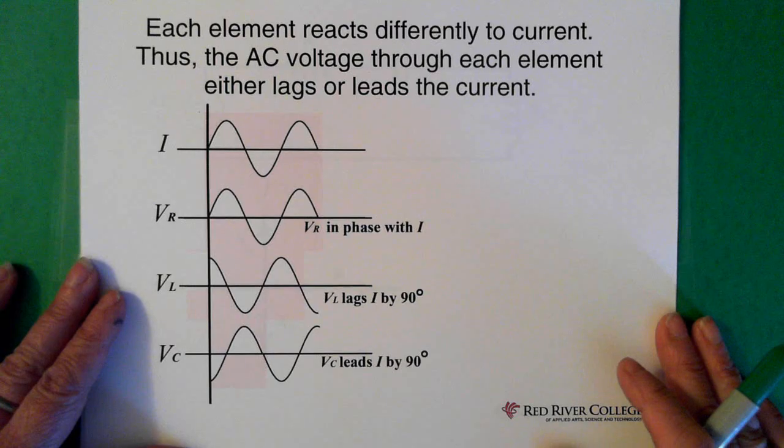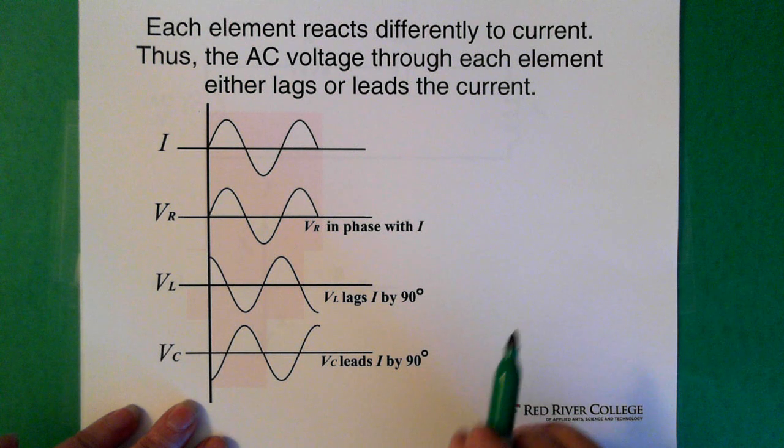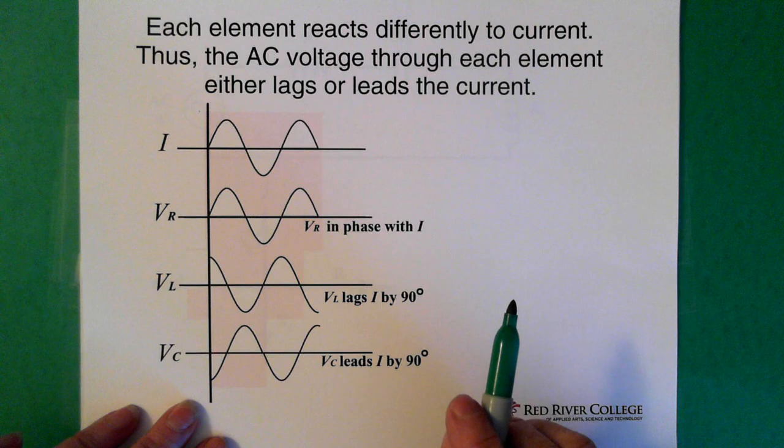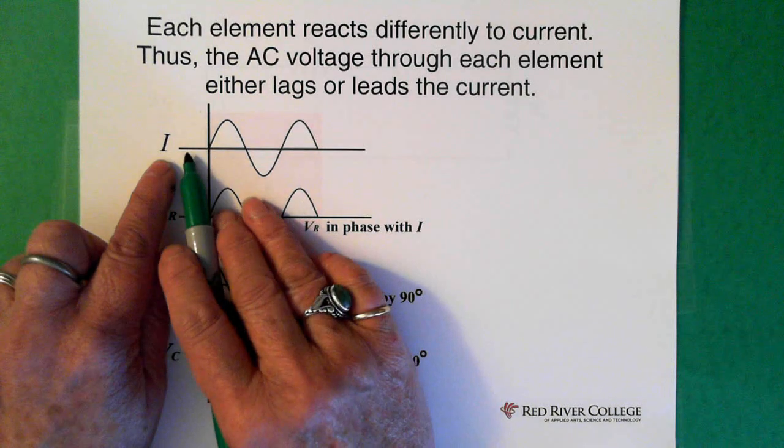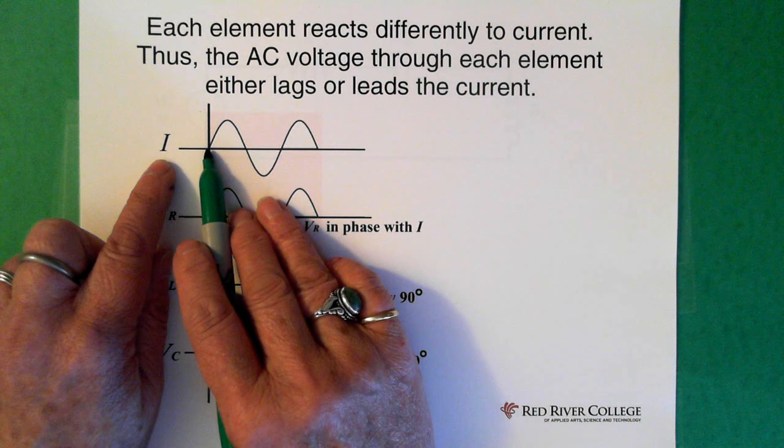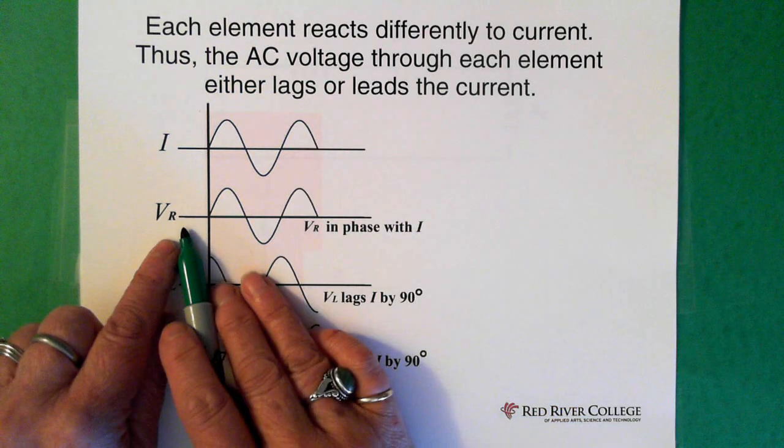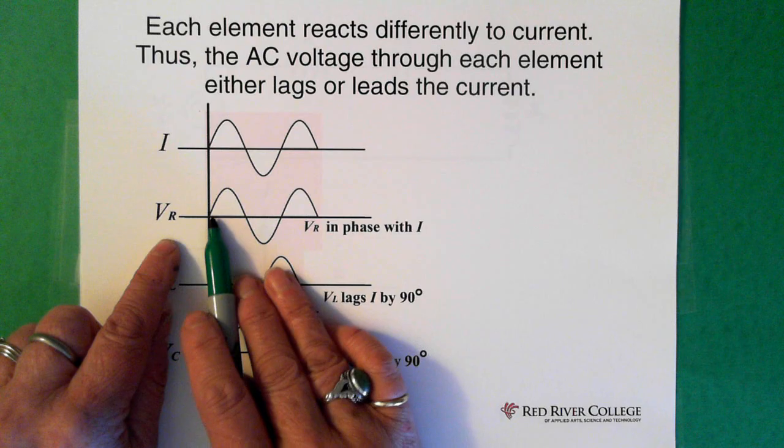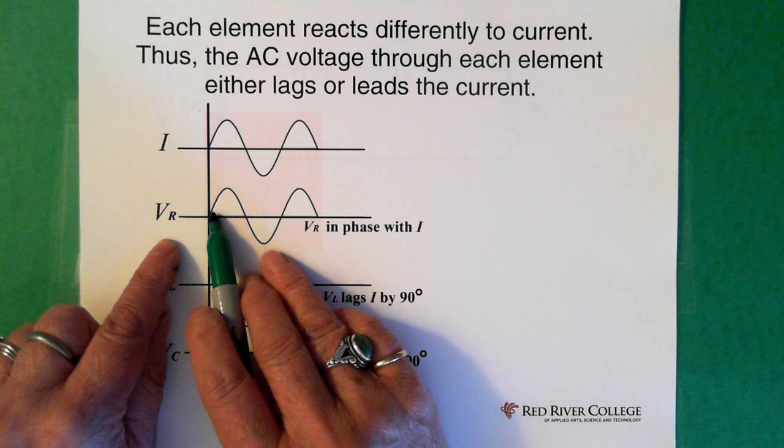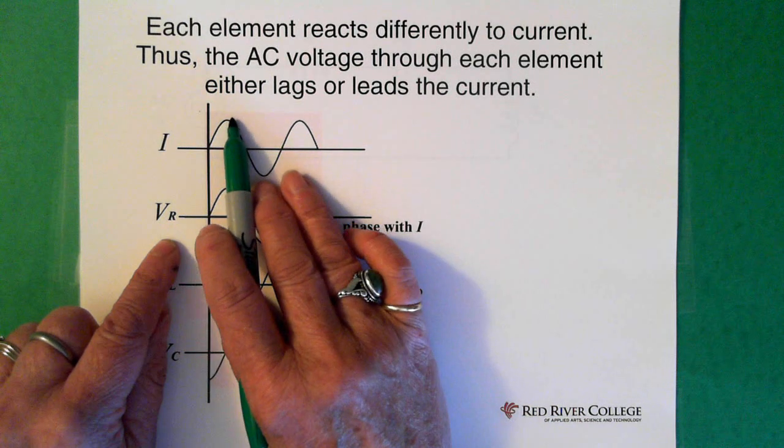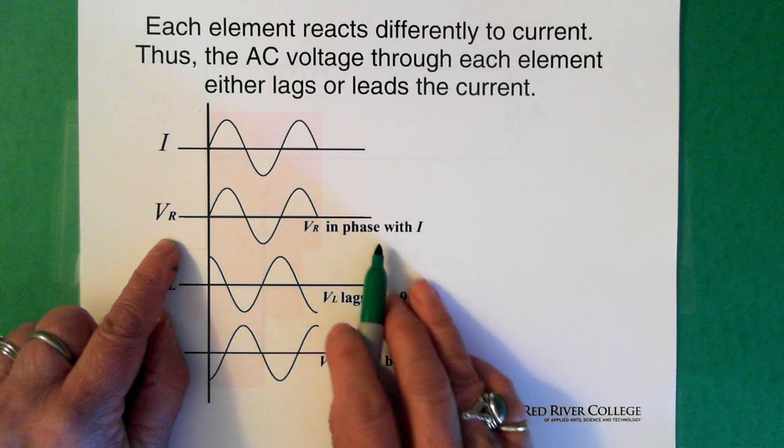Now, in an AC circuit each of these three elements—capacitor, inductor, resistor—all react differently to current. So here, if we have just a graph of current, and at this point, so at time zero, we have the current flowing here. In the resistor, what happens is the voltage in the resistor follows the current. So when the current here is at its max, the voltage here is at its max. So what we say is that the voltage across the resistor is in phase with the current.